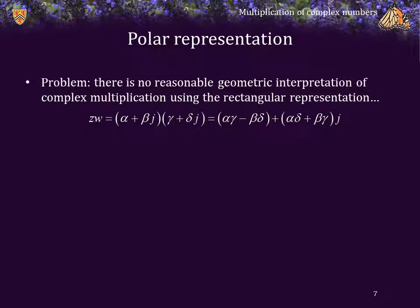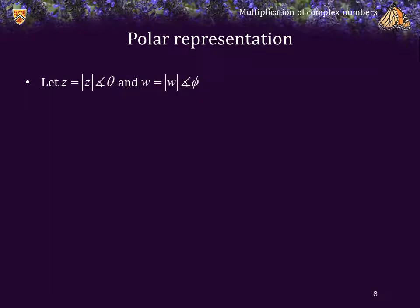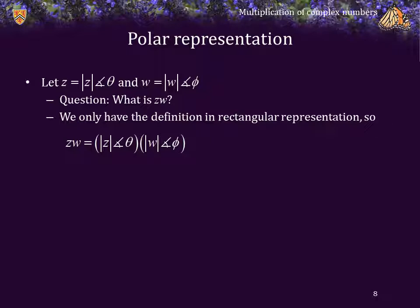Now there's one problem: there's no reasonable geometric interpretation of complex multiplication using the rectangular representation. To actually understand what's going on, we're going to look at the polar representation. So, let z be its magnitude phase theta and w be its magnitude phase phi. What is the product of these two? We're going to multiply the polar representations, but the only multiplication we have defined is the rectangular representation, so we're going to replace each of those with the rectangular representation.